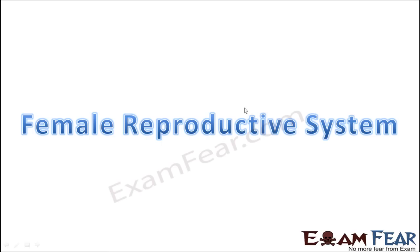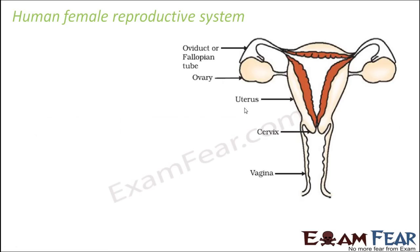We already saw how the male reproductive system is organized and how the male gametes are produced. In a similar way, we will look at the structure of the female reproductive system. This is how the female reproductive system looks like, and the important parts of the female reproductive system are as follows.